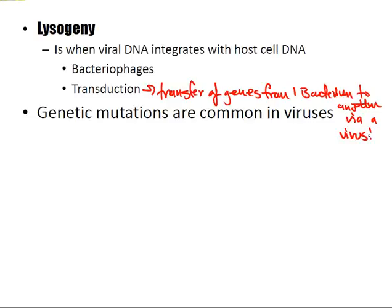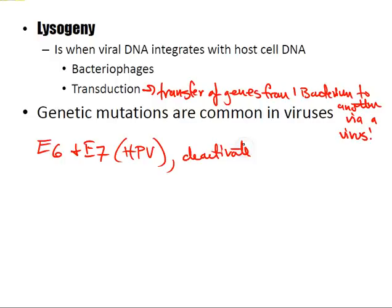Genetic mutations are common in viruses, which rely on bypassing normal safeguards of genomic integrity to replicate. A cellular biology correlate: oncogenes are often activated and tumor suppressor genes deactivated by viral activity. For example, the E6 and E7 proteins of HPV deactivate p53, which regulates the cell cycle, and the RB host proteins, which prevent replication of mutated cells.